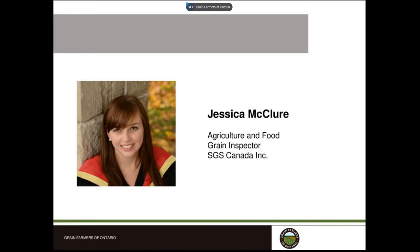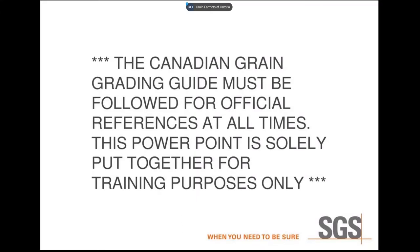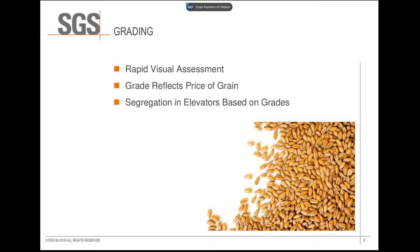This webinar is for training purposes only, and the Canadian Grain Guide must be followed for official references always. Grading is a rapid visual assessment to determine the quality of the grain. The grade reflects the price of grain and can also determine if segregation of a load is needed at the elevator.